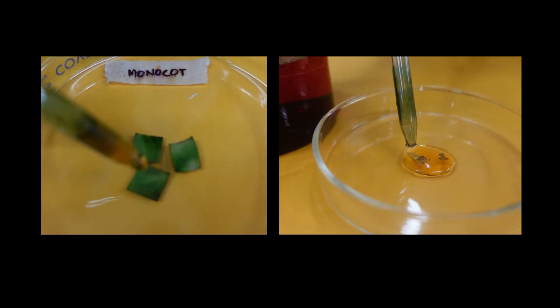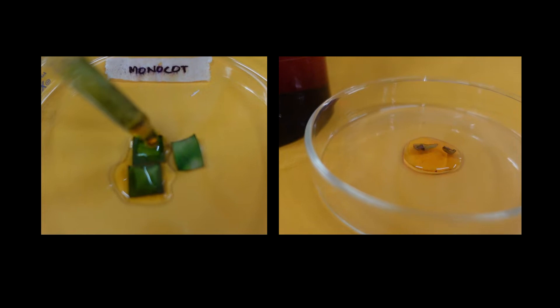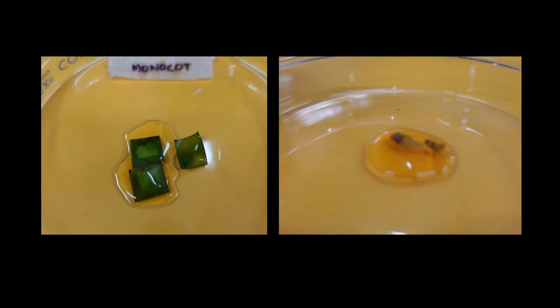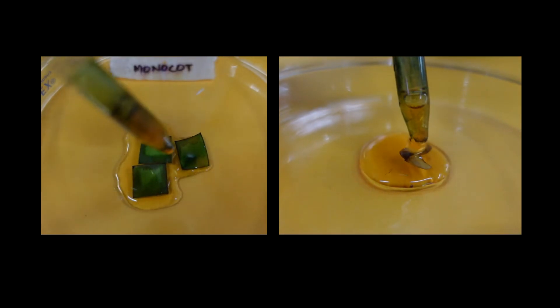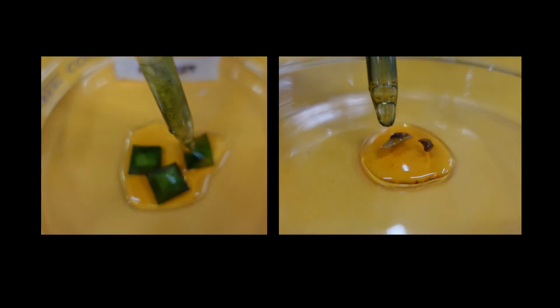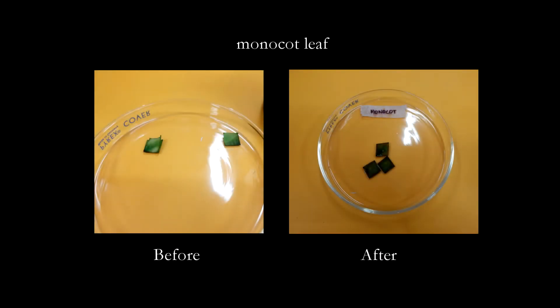Take the leaves and allow them to cool on a watch glass. Then bathe them in iodine solution. Finally, remove the excess iodine solution and record your observations.